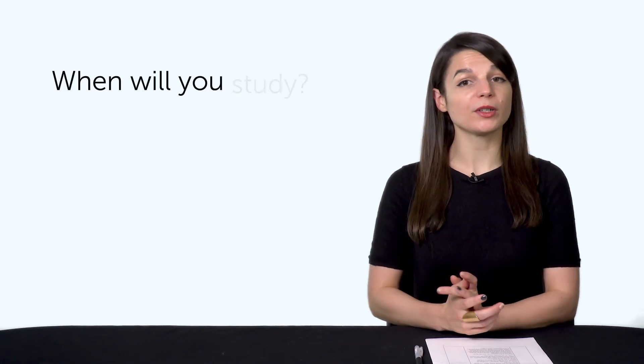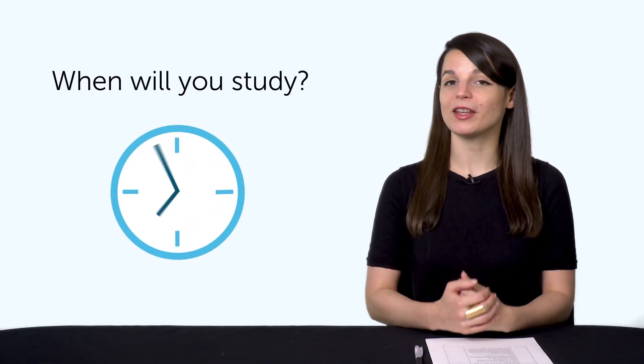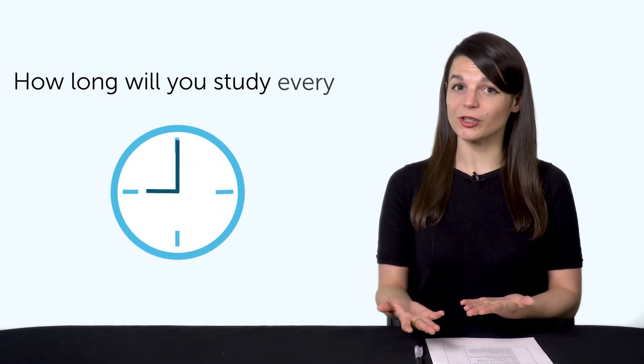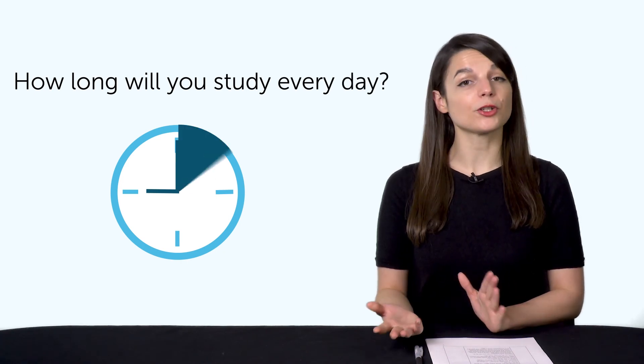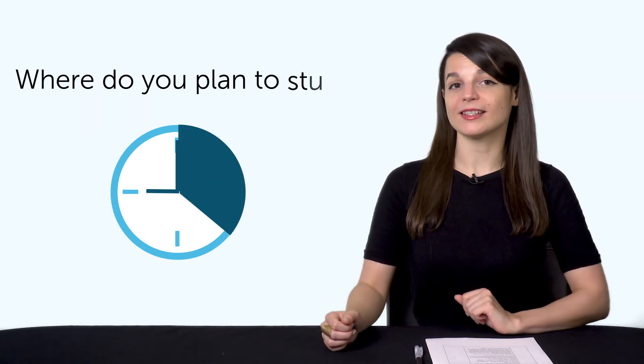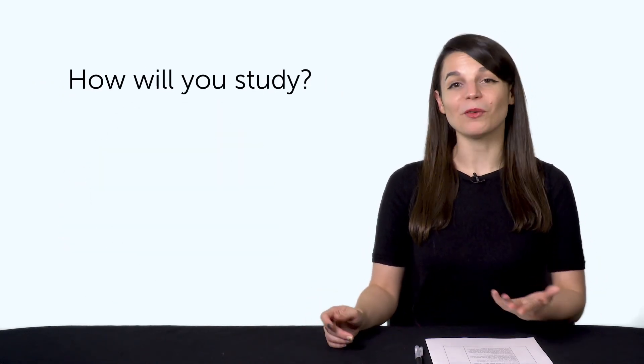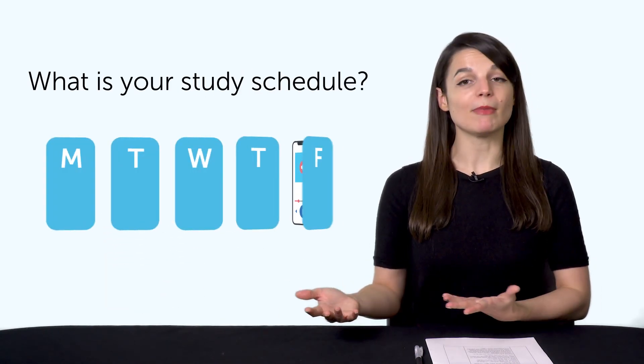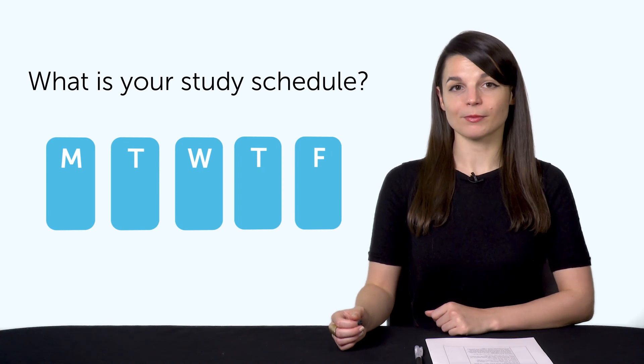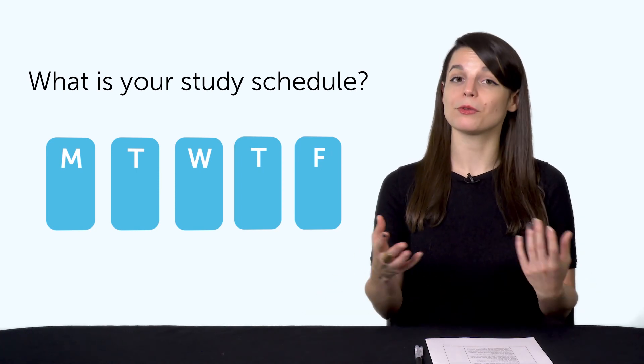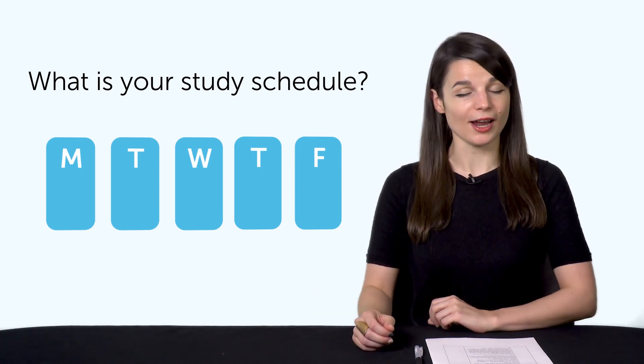So, for example, when will you study? I'll study at 9pm on weekdays. How long will you study every day? I'll study for 20 minutes. Where do you plan to study? I'll study at home, in the living room, on my computer. How will you study? I'll listen to one audio lesson a day for five days. What is your study schedule? From Monday to Friday with audio lessons. I'll listen to the lesson, then go through the lesson notes for 20 minutes each day. Here are a few more things you can do to improve your chances of success.